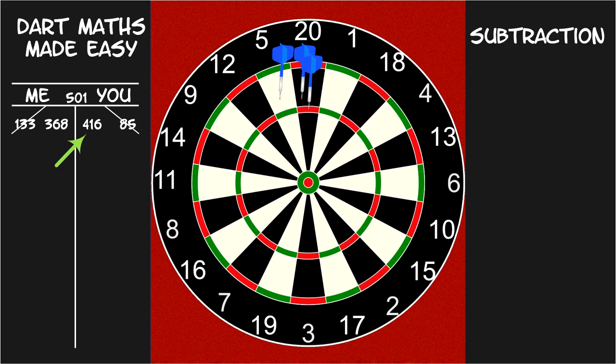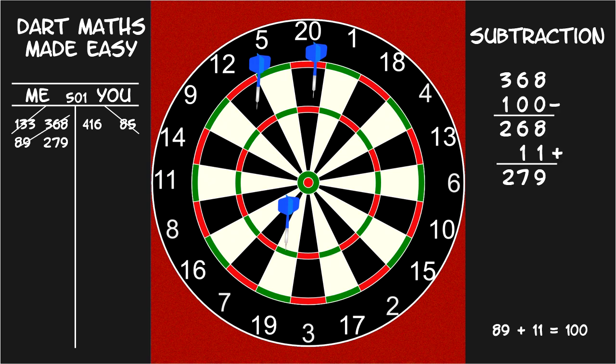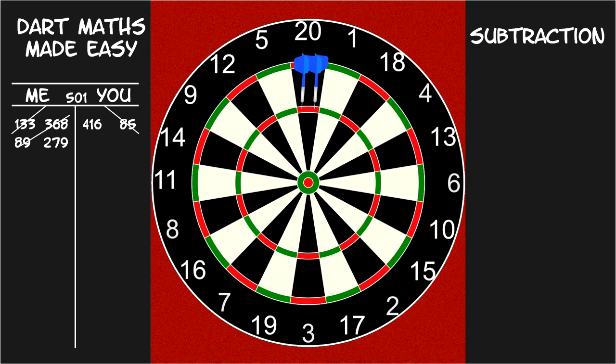Round up, subtract, add back the difference. If you want to subtract 89, subtract 100 and add back 11. If you want to subtract 180, subtract 200 and add back 20.